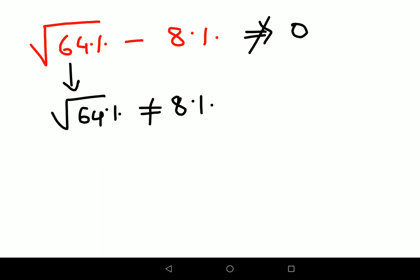Going back to our question, we have square root of 64%, which is 8 upon 10 minus 8%. So that is 8 upon 100.